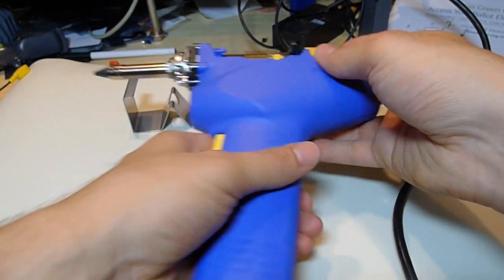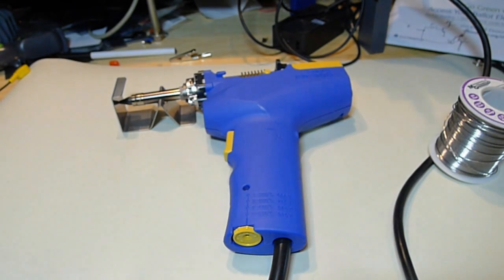So there you go. So that's just using the FR-300 for some quick desoldering work.